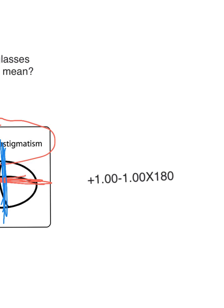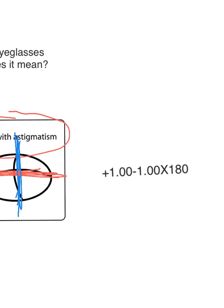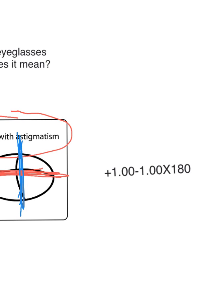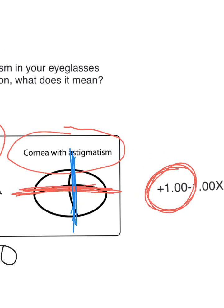So how do you do that? Well, there are rules. The first thing you look at is the first number, which is called the sphere number. You know that one of these two meridians — either the blue or the red — is plus one.